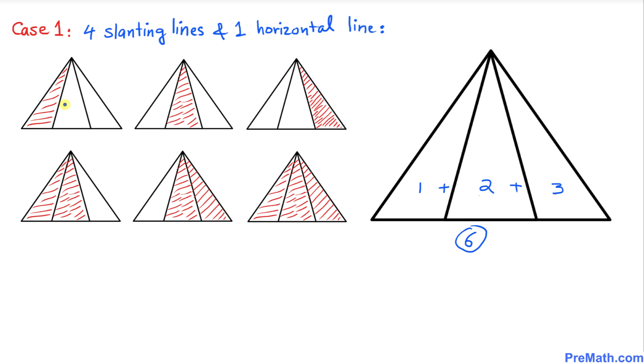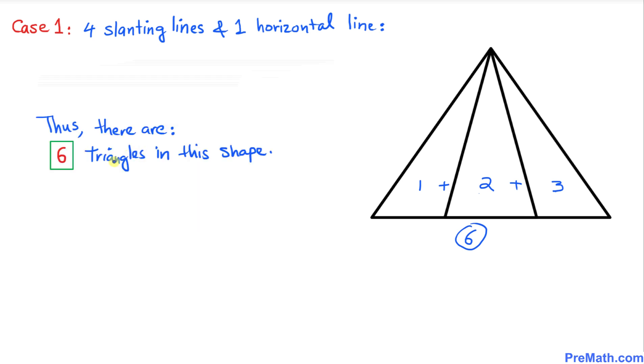Here's the visual representation of all these triangles possible in this given shape. As you can see this is number one, number two, number three individual triangles, and then two of a kind. This is number four, this is number five, and this is the whole big one, so that's number six. Thus there are six triangles in this shape.